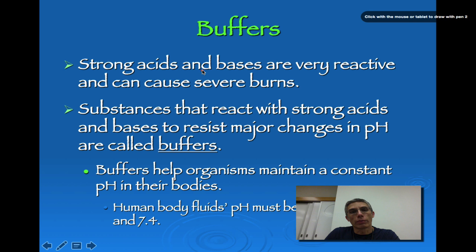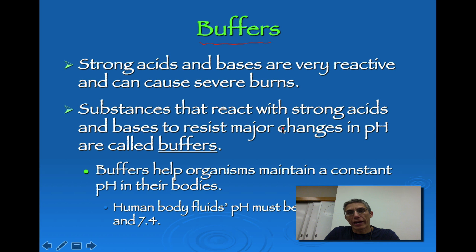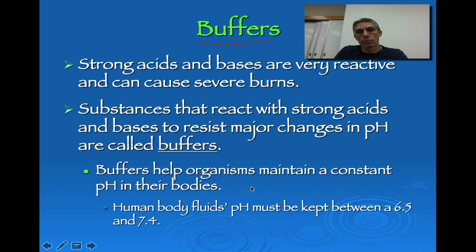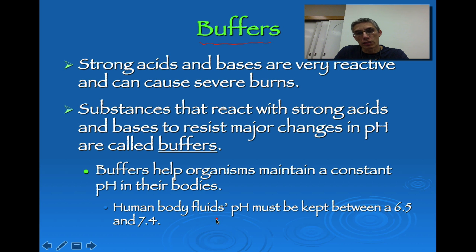The last topic regarding pH is buffers. Strong acids and bases can be very reactive and cause severe burns. Buffers are substances that react with strong acids and bases to resist major changes in pH, helping organisms maintain a constant pH in their body. For example, human body fluid pH is usually kept between 6.5 and 7.4 — relatively neutral — and buffers in our body help keep that level stable.